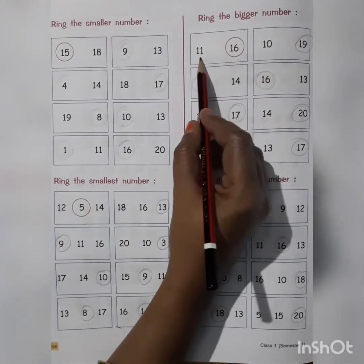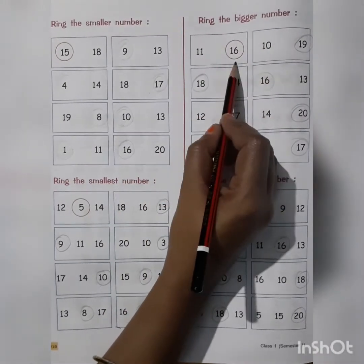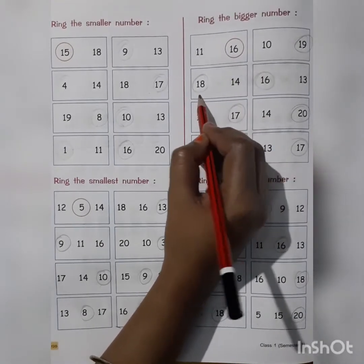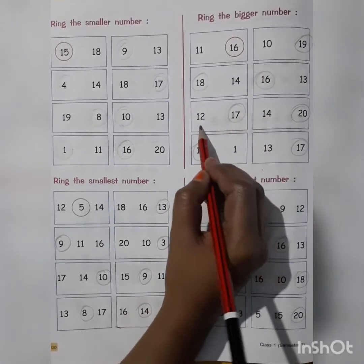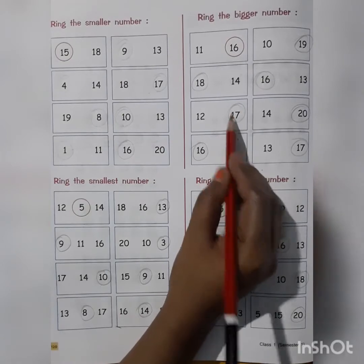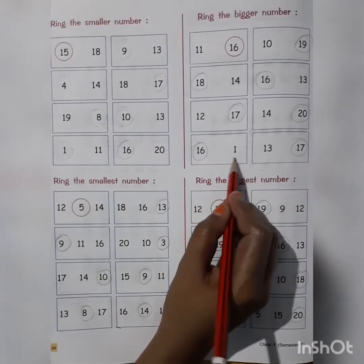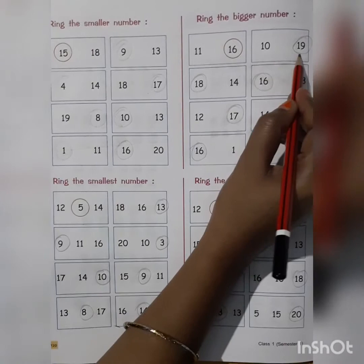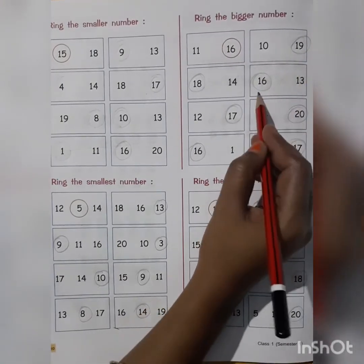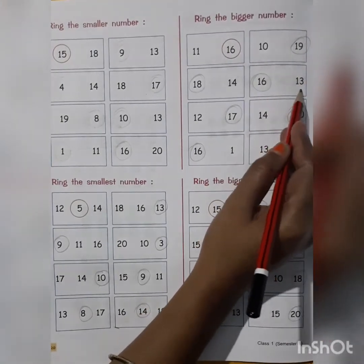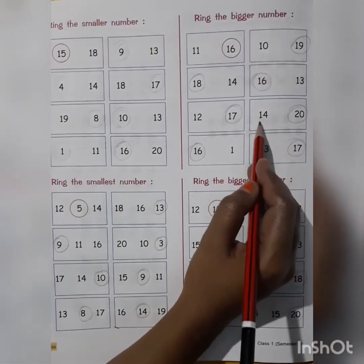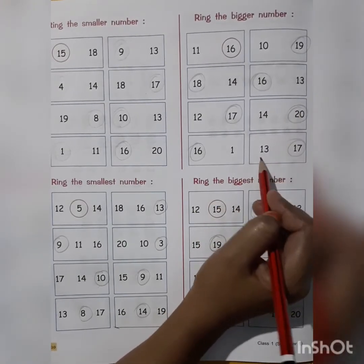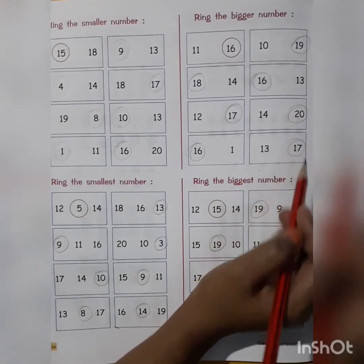Ring the bigger number. In both numbers, we have to ring the bigger one. 18 and 14 — which is bigger? 18. 12 and 17 — 17 is bigger. 16 and 1 — 16 is bigger. 10 and 19 — 19 is bigger. 16 and 13 — 16 is bigger. 14 and 20 — 20 is bigger. 13 and 17 — 17 is bigger.